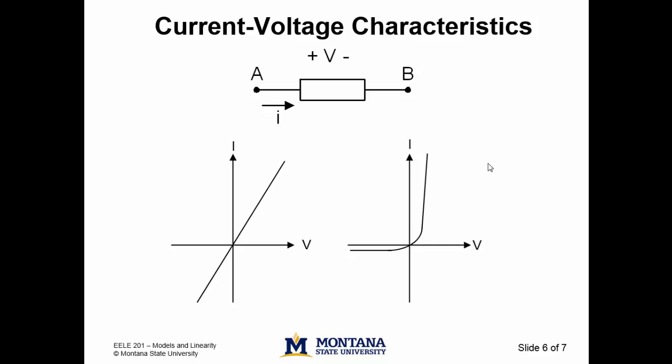Notice what the resistor's characteristic tells us. As we increase voltage, we get a linear increase in current. And when we flip the polarity of the voltage, the direction of the current flips as well.